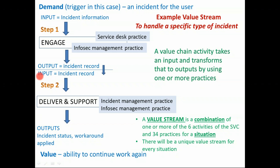Moving on to step two: the incident record becomes the input and 'deliver and support' is triggered as a value chain activity. This triggers incident management as well as information security management, with the purpose of resolving the issue and ensuring the system is operational. The output is incident status and a workaround or temporary fix applied. As soon as this happens, value is delivered — the user is able to continue working. So the complete chain here goes from demand to value using two steps — 'engage' then 'deliver and support' — each step being an SVC activity working along with one or more practices.